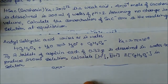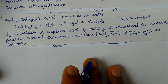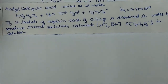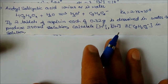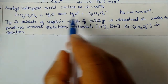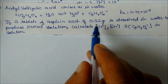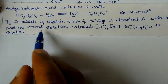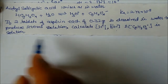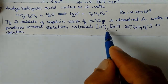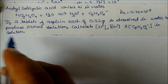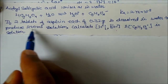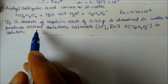Next question: acetylsalicylic acid (aspirin, HC₉H₇O₄) ionizes in water. If two tablets of aspirin, each of 0.32 g, are dissolved in water to produce 250 mL of solution, calculate the concentrations of H⁺, the aspirin anion C₉H₇O₄⁻, and OH⁻ in the solution.